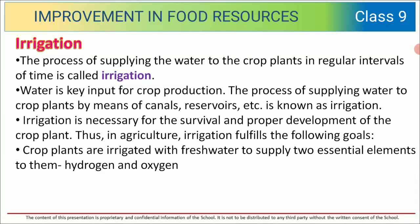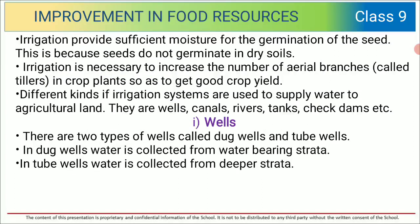Irrigation is necessary for the survival and proper development of crop plants. In agriculture, irrigation fulfills the following goals: crop plants are irrigated with fresh water to supply two essential elements — hydrogen and oxygen. Irrigation provides sufficient moisture for the germination of seeds, because seeds do not germinate in dry soils. Irrigation is also necessary to increase the number of aerial branches called tillers in crop plants, so as to get good crop yield.